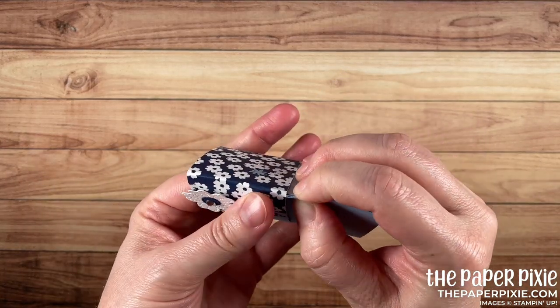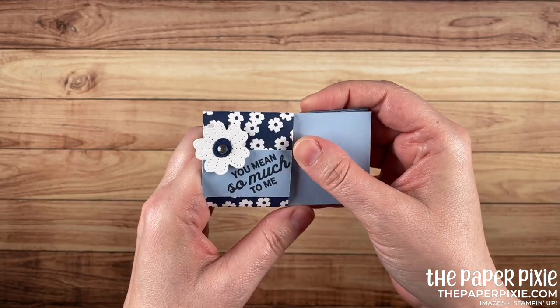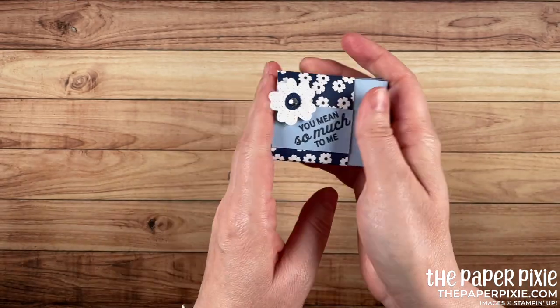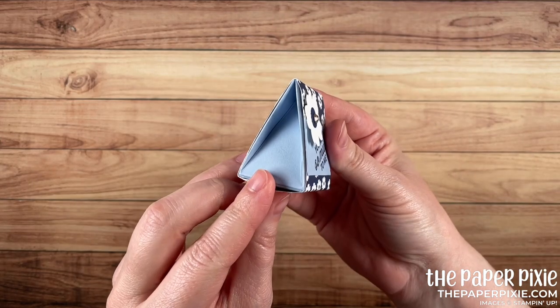but look how cute that little triangular box is. And then it just slides into this paper belly band. Now, this belly band's a little bit tight. I'm going to try to do a little bit looser on this version. But I love how that holds it together.